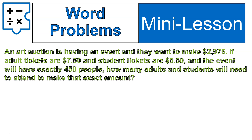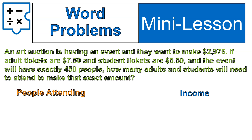This is the type of word problem we're talking about. An art auction is having an event — they want to make $2,975. If adult tickets are $7.50 and student tickets are $5.50, and the event will have exactly 450 people, how many adults and students will need to attend to make that exact amount? The first thing you need to do is make two equations out of the information. The first equation is the people attending, and the second equation is the actual income that you're earning.